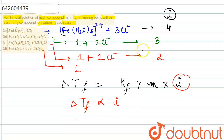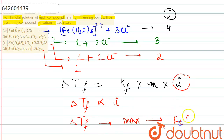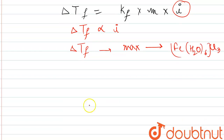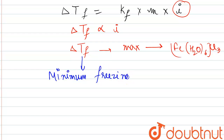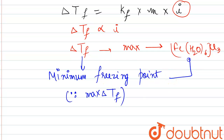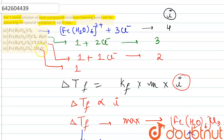The first complex, Fe(H₂O)₆Cl₃, has the maximum i value of 4, so the depression in freezing point ΔTf is maximum for this complex. Because ΔTf is maximum, the actual freezing point is minimum. Therefore, the first complex will have the minimum freezing point. This is the answer.